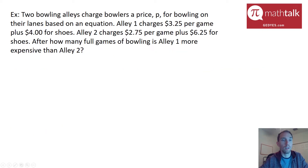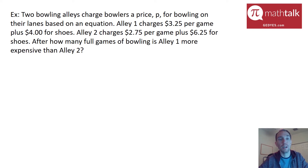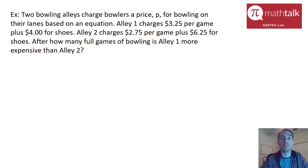Let's look at another example. Two bowling alleys charge bowlers a price P for bowling based on an equation. Alley one charges $3.25 per game plus $4 for shoes. Alley two charges $2.75 per game plus $6.25 for shoes. After how many full games is alley one more expensive than alley two? This is different from the last example because we're not just plugging in a number — we have to find the equations and then compare them.